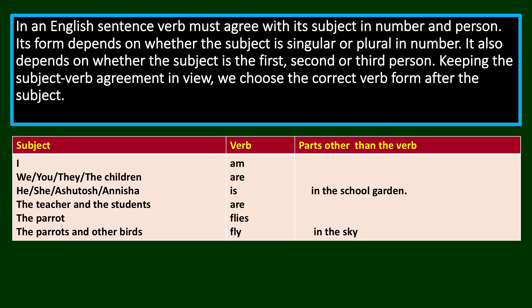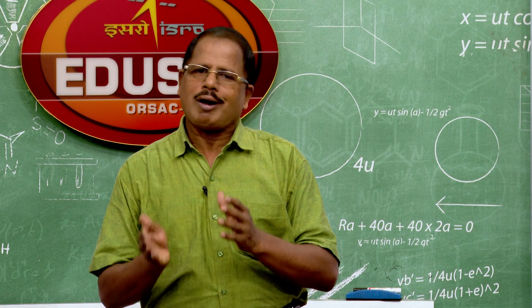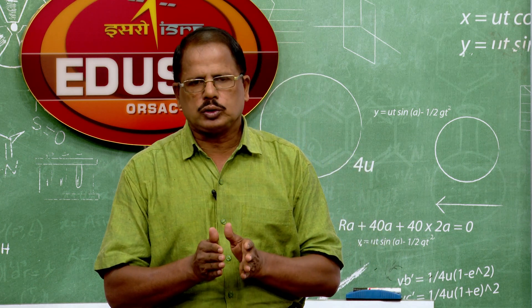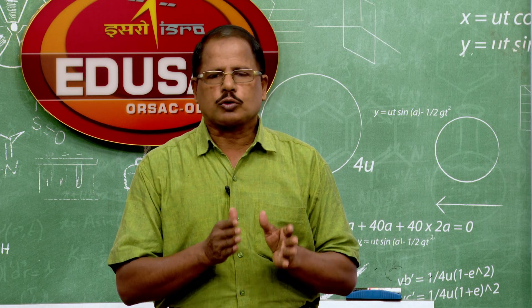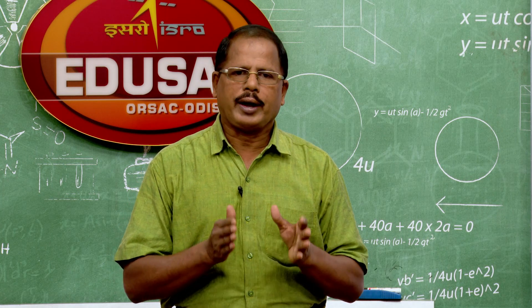The teacher and the students — both together — take 'are' in form. The parrot flies — the parrot is singular. But the parrots and other birds — they fly in the sky. When the subject is plural, the verb form is 'fly,' not 'flies.' 'Flies' is the singular form. So the number and person of the subject determines the number and person of the verb — how the verb will agree with the subject.